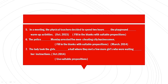Next: The police ___ Monday arrested five main ___ cheating city businessmen. Fill in the blanks with suitable prepositions. The question was in March 2015.